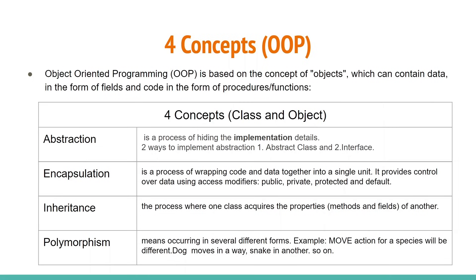To wrap up, the four broad OOP concepts are: abstraction, encapsulation, inheritance, and polymorphism. If you understand what Java is and these slides, you are almost halfway to learning Java. Thanks for tuning in — looking forward to explaining more in detail. See you in the next video!